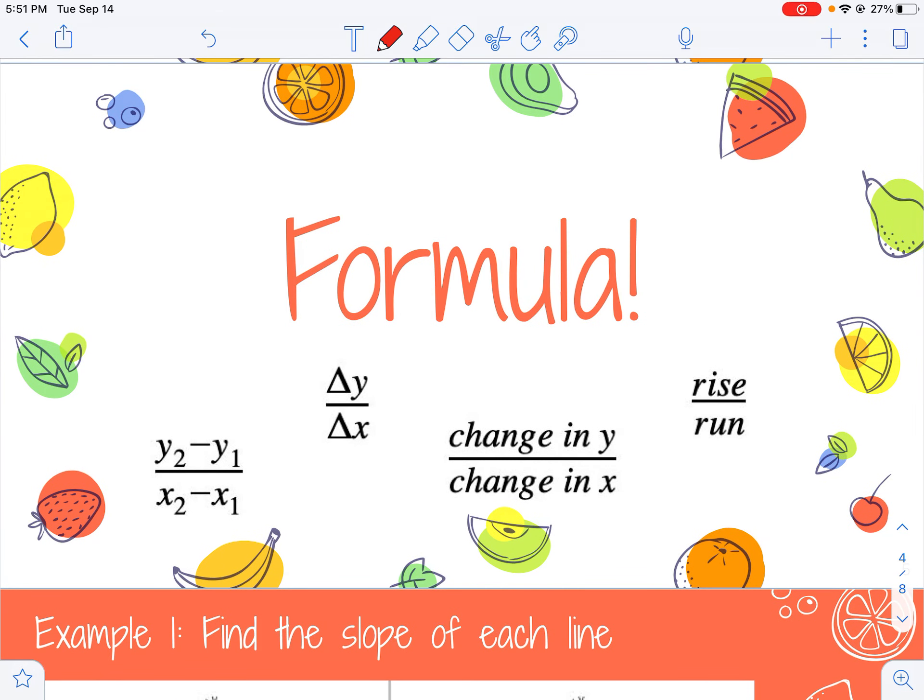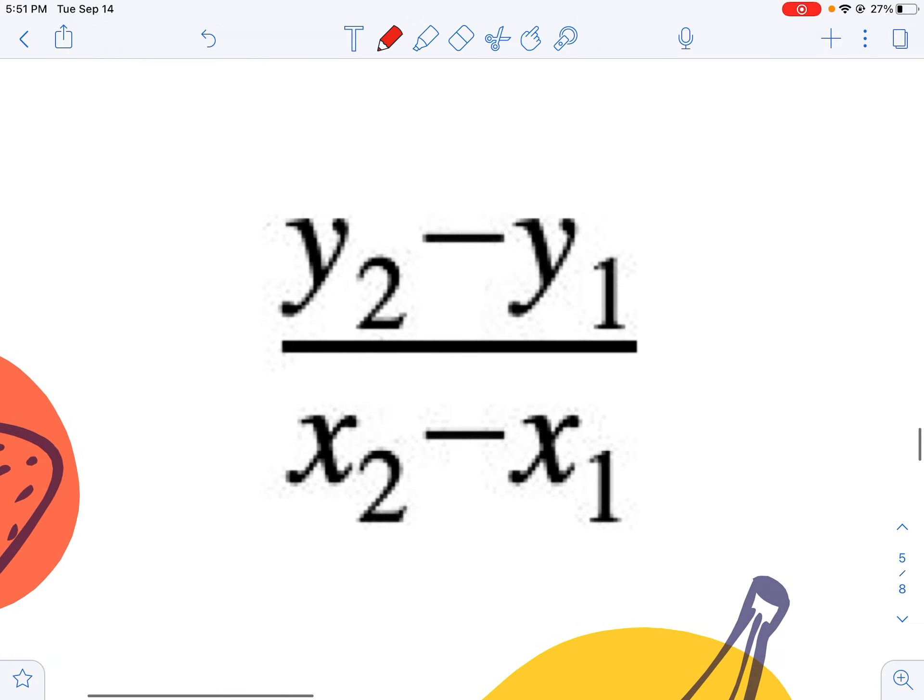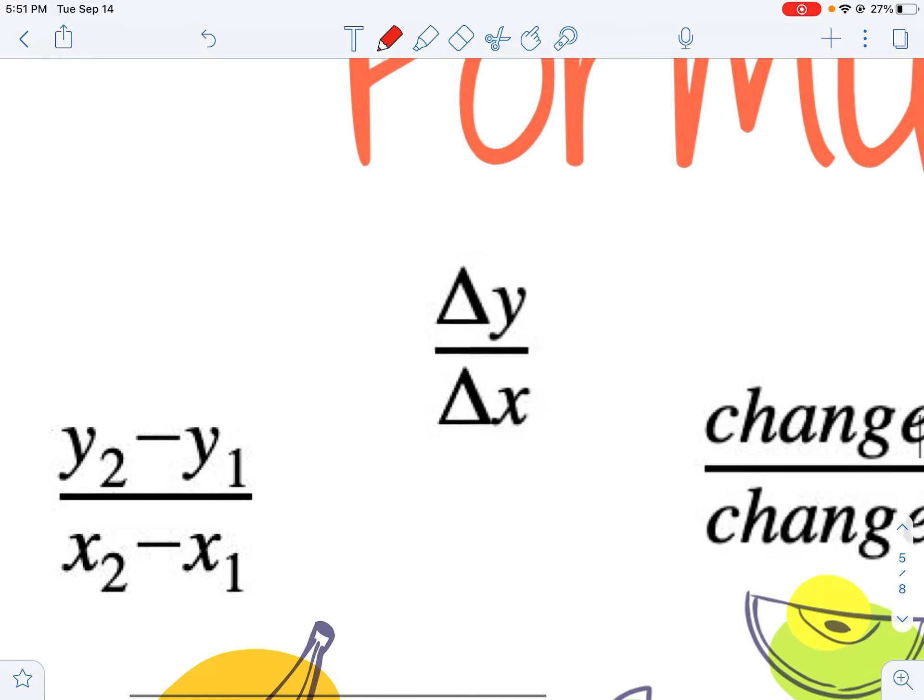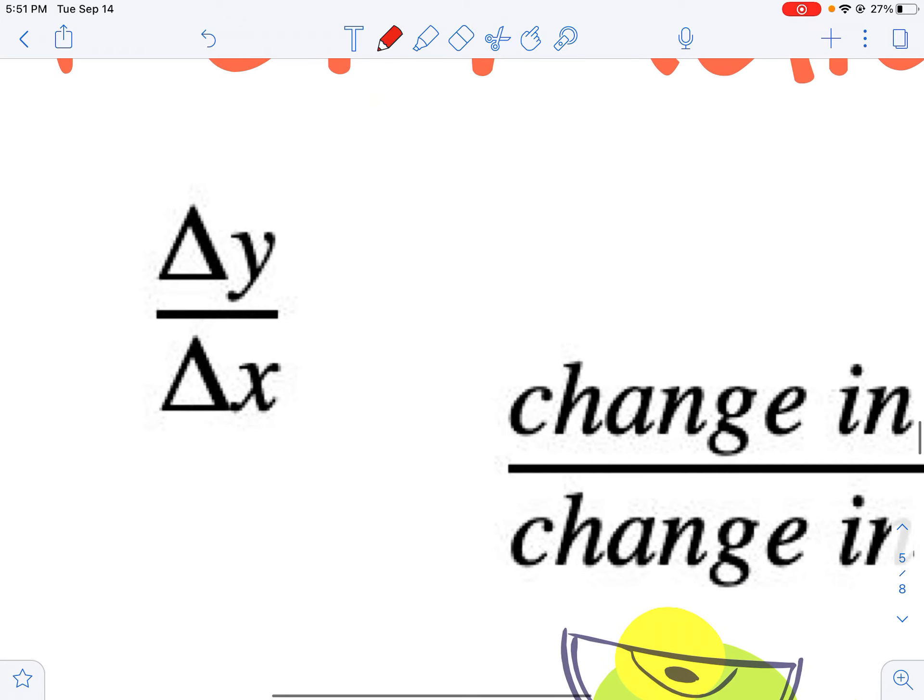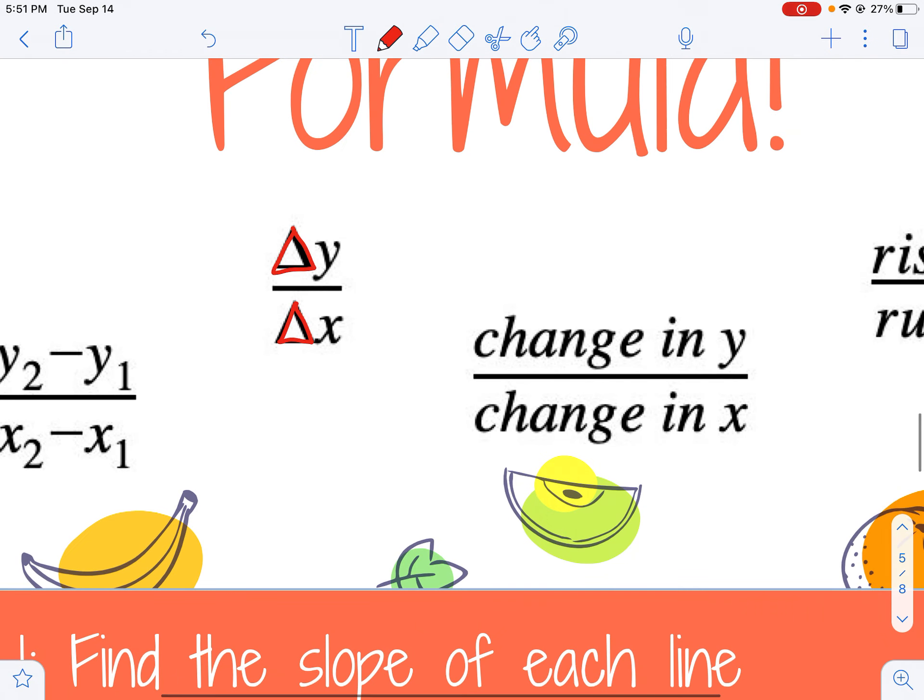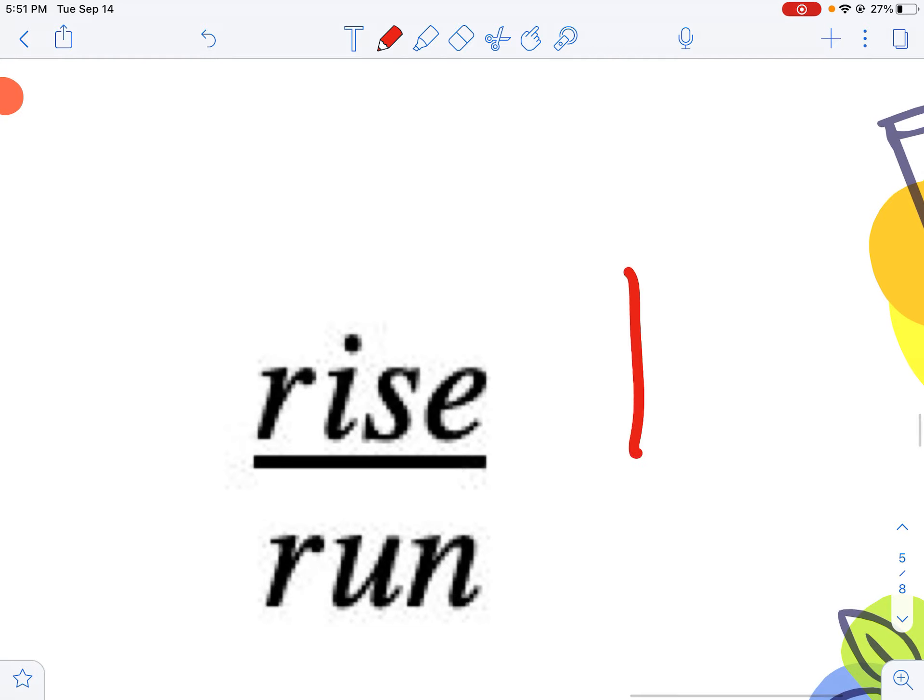Here are some different ways that we think about slope. We can use a formula: y2 minus y1 divided by x2 minus x1. We can think of it as change in y over change in x. This is the Greek letter delta, which stands for change in, so delta y over delta x, or we can think of it as rise divided by run.